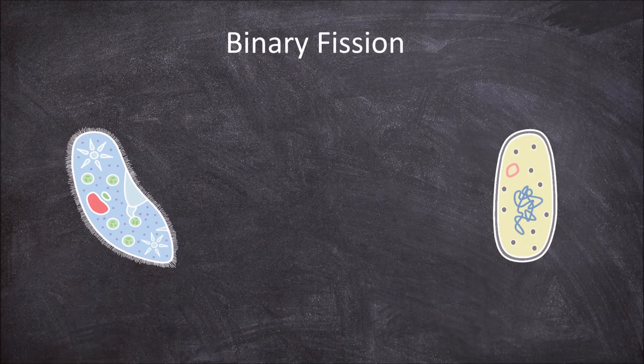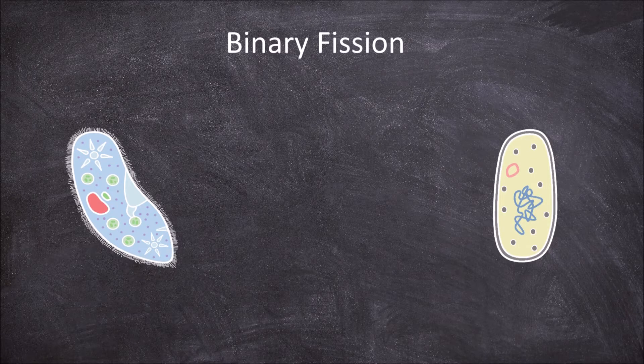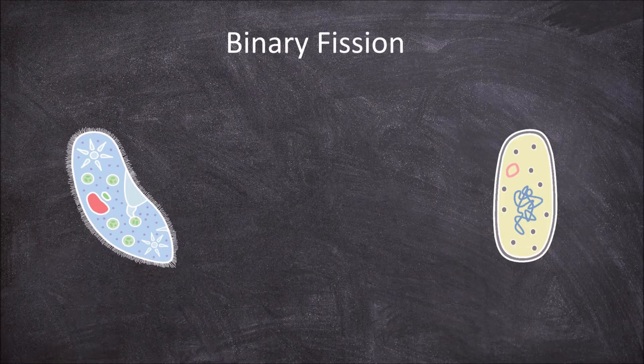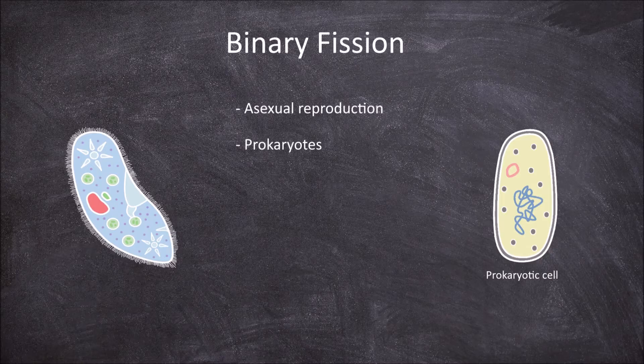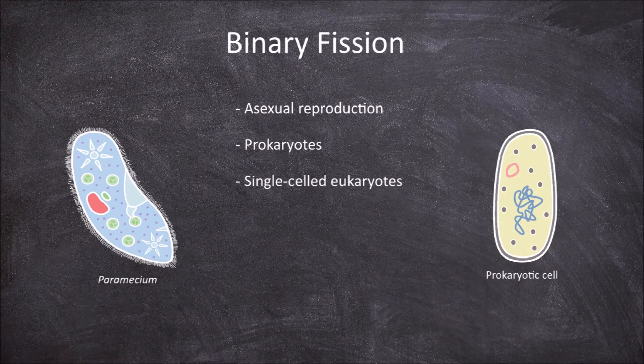In this video we're going to look at the steps involved in binary fission. Binary fission is a form of asexual reproduction used by prokaryotes and some single-celled eukaryotes such as paramecium.